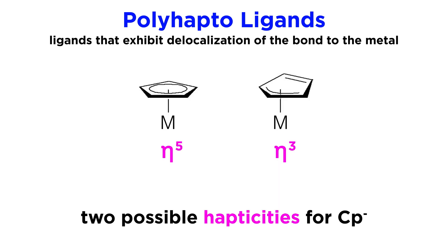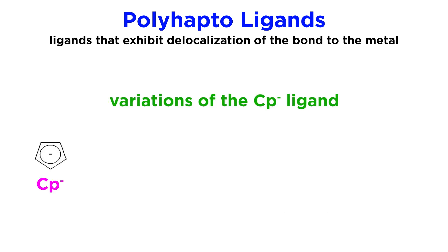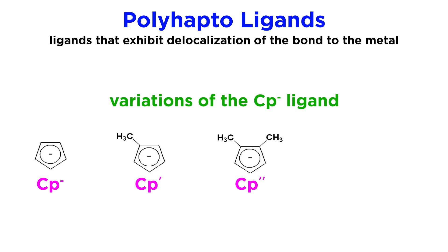We should point out that we can have the same ligand bonding to the metal in eta3 fashion, meaning that only three carbons are interacting with the metal, which would be depicted in this manner, and it will donate only two pairs of electrons. The cyclopentadienyl anion, when acting as a ligand, will be abbreviated as Cp⁻ and there are some slight variations we may see. Cp' means there is a methyl group present; Cp'' means two methyls in any positions; and Cp''' means methyls at all five positions.